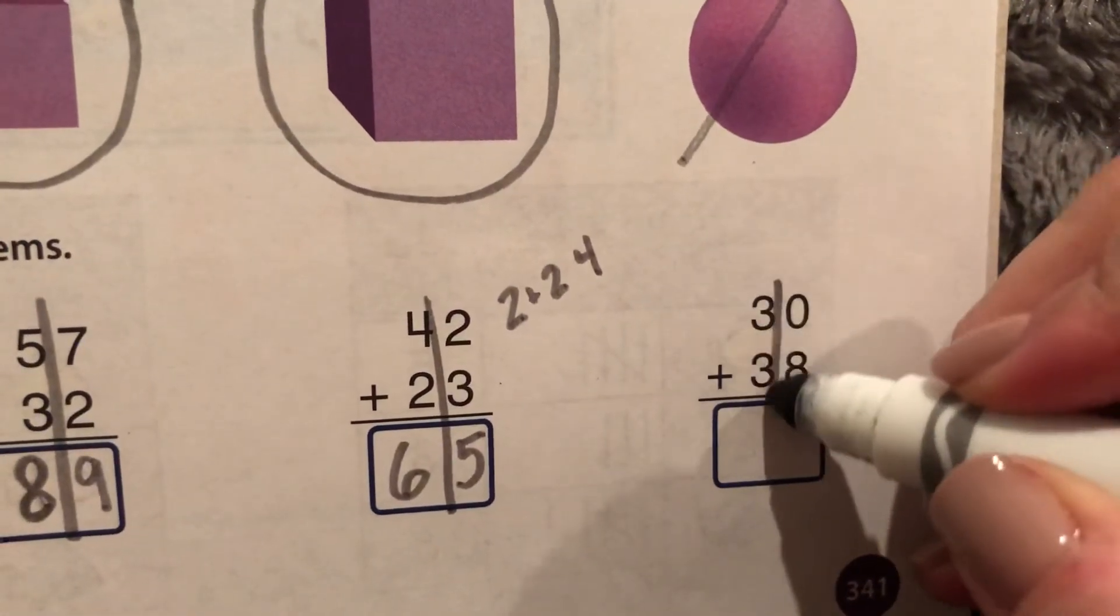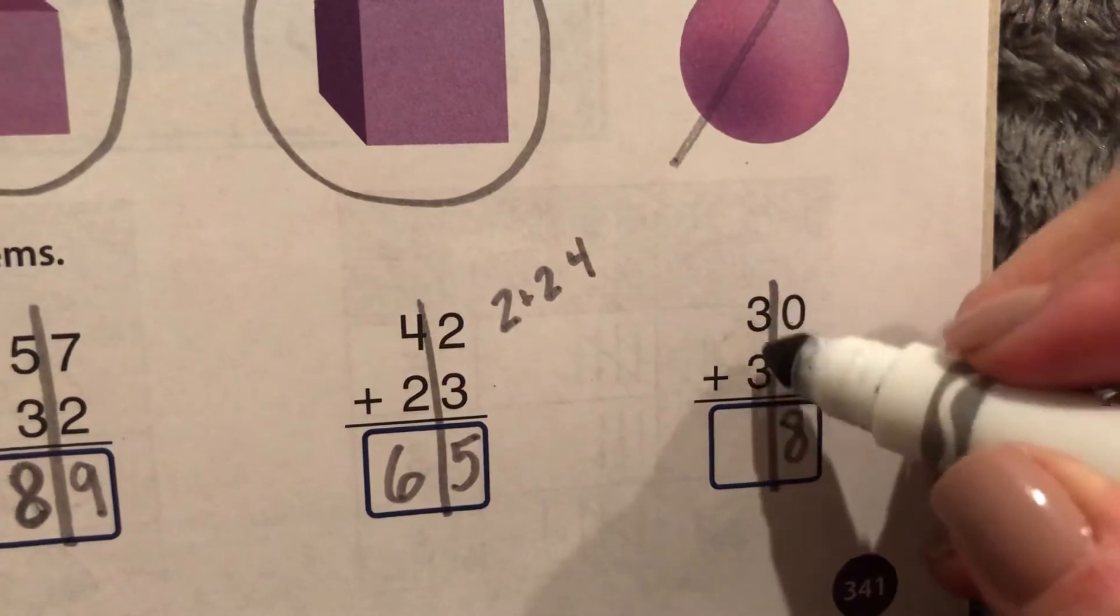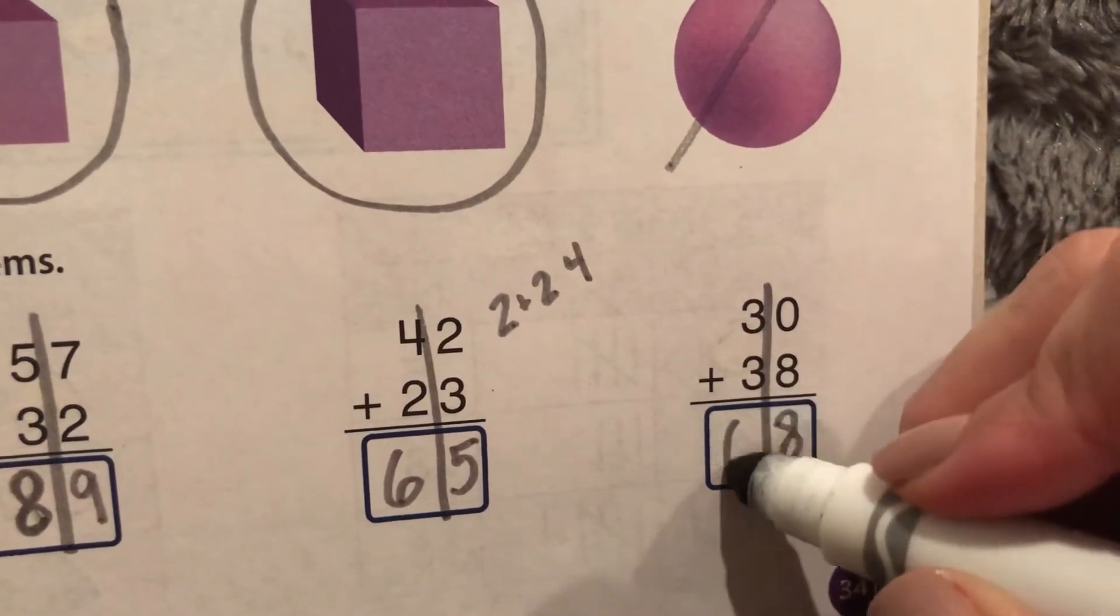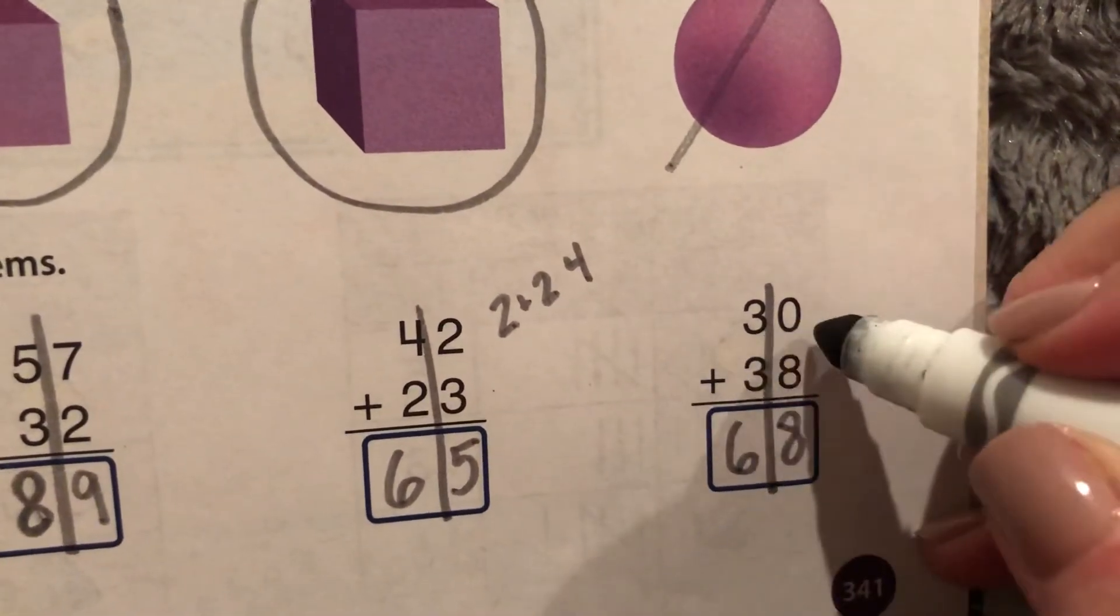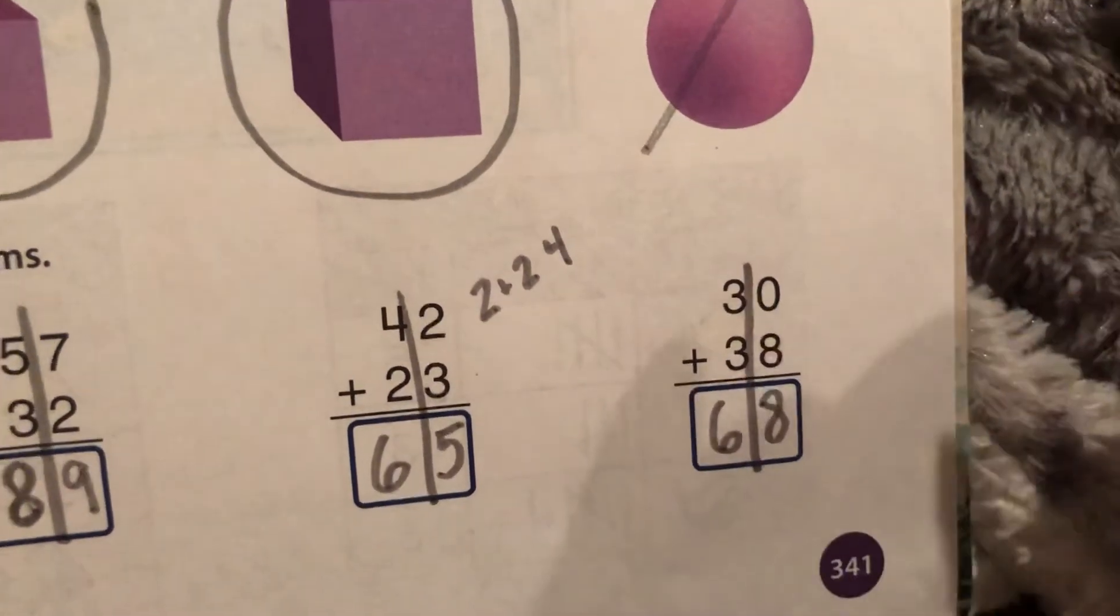What is zero plus eight more? Eight. And three and three is a double which is six. So 30 plus 38 equals 68. Okay, let's flip to the back. See what's back there. Ooh, I see a lot of doubles.